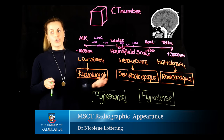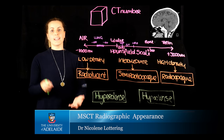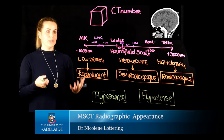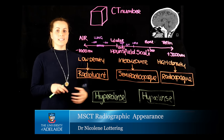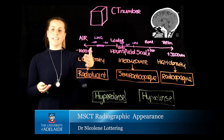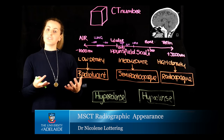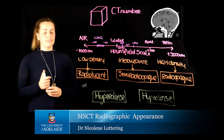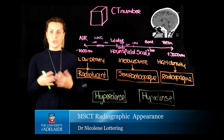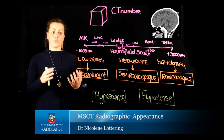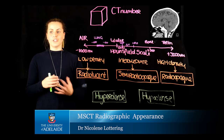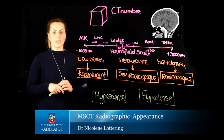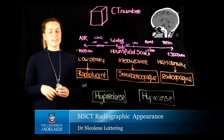Hypodense structures are those that have a lower density. For example, the ventricles, which contain cerebrospinal fluid in the brain, appear as a darker shade of gray, further down on the HU scale and therefore darker. I hope this clarifies the appropriate anatomical terminology to use when interpreting CT scans and radiographs. Please don't confuse this with MRI terminology — that is a completely different topic which will be covered in subsequent videos.